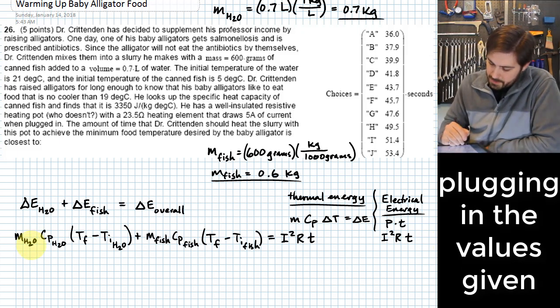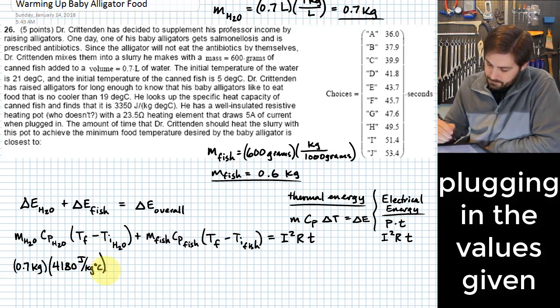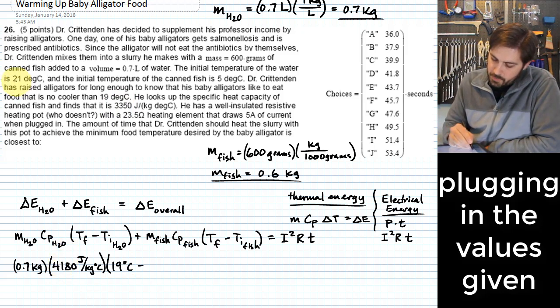It's 4,180 joules, and this is going to be 0.7 kilograms. C sub P of the water is 4,180 joules per kilogram degrees C. The final temperature that we need, this is how warm the alligators want their food, is 19 degrees C. For the water, the water started out at 21 degrees C.